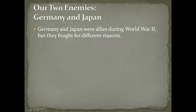Our two enemies — Germany and Japan — are the two we're going to talk about. For the United States, we had two major enemies, and that's going to be Germany and Japan. Now this is going to be a world war, so all kinds of countries are going to be involved, but we're going to talk specifically about Germany and Japan.